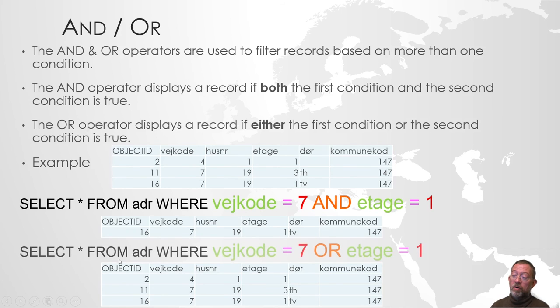If we use the OR, it says okay. Is, well in this case here, is vejkode equal 7? Is 4 equal 7? No, it's not. Is etasia equal 1? Yes, it is. So that will be included.